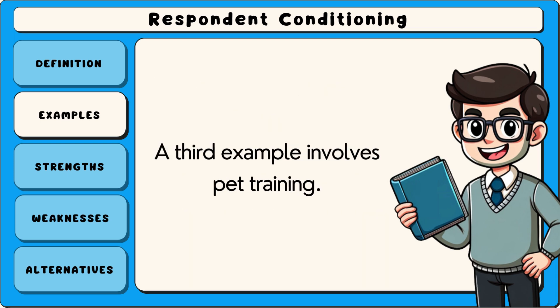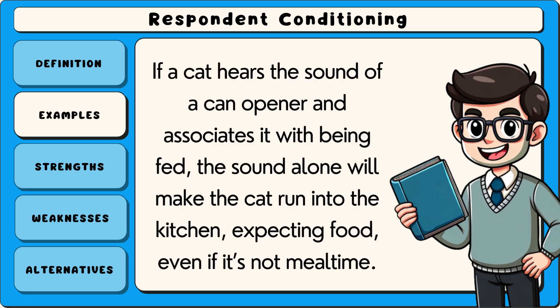A third example involves pet training. If a cat hears the sound of a can opener and associates it with being fed, the sound alone will make the cat run into the kitchen expecting food, even if it's not meal time.